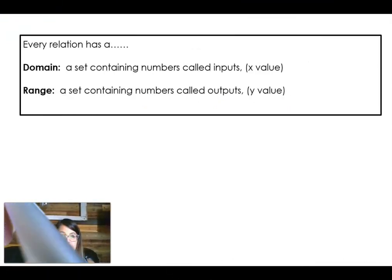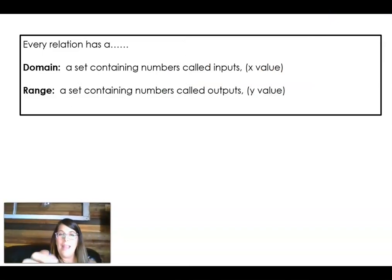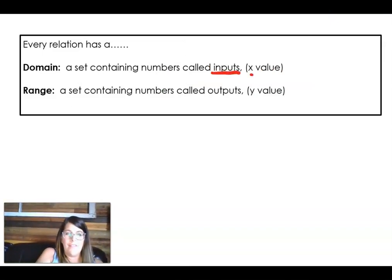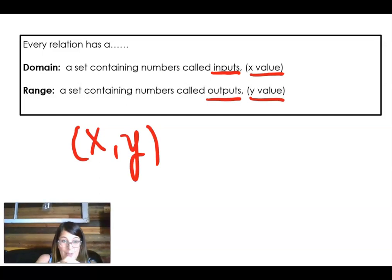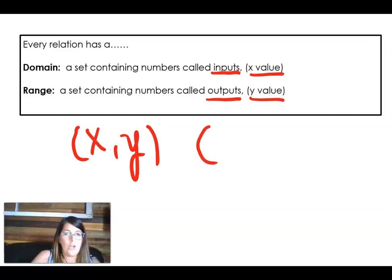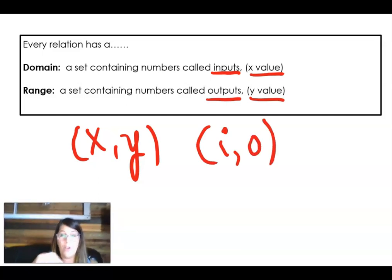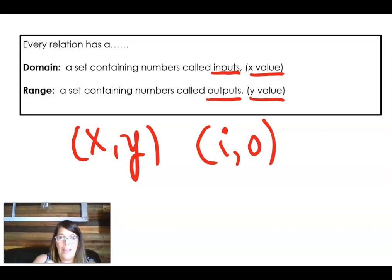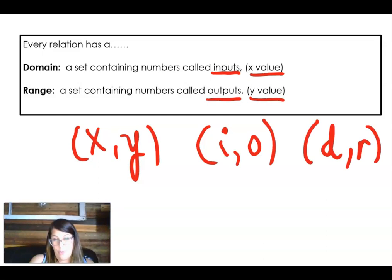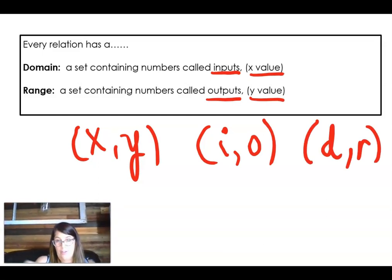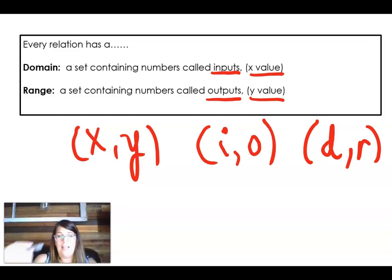Every relation has a domain and range. The domain is the set of the inputs or the set of the x's. And the range is the set of the outputs or of the y values. Remember how we write the ordered pair x, y, and how the x comes first because it goes in ABC order? If I talk about inputs, i comes before o. So that helps me remember the domain is all the inputs. And the y's, the range, that's all the outputs.